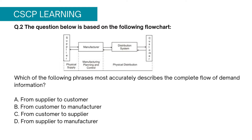Upstream supply chain activities include all the activities related to the manufacturer's suppliers, like raw material suppliers, product packaging suppliers, gas and electricity suppliers, etc. Whereas downstream activities pertain to entities and processes which help in delivering the product to the final customer, like distributors, wholesalers, and retailers. Please remember that information always flows back and forth along the supply chain.